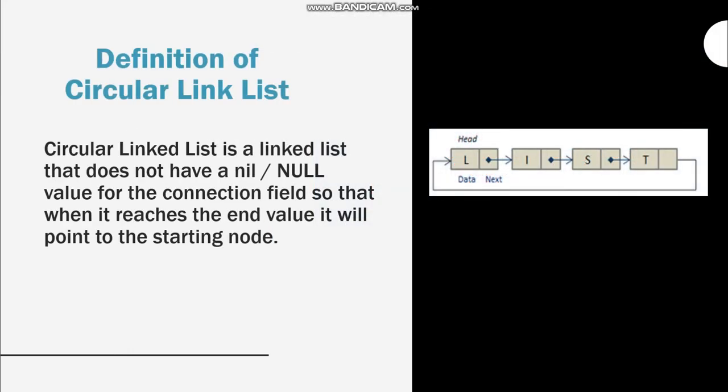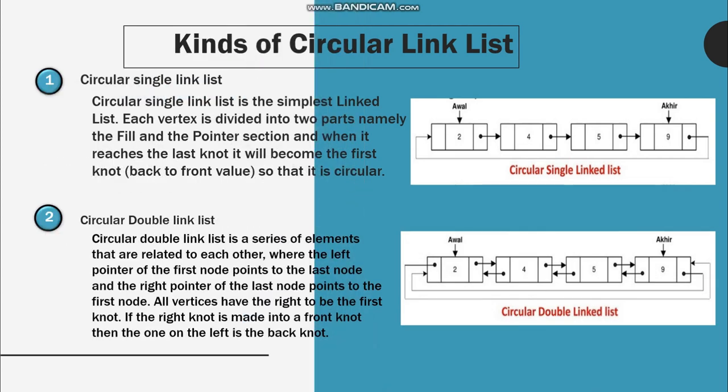Next is the definition of circular linked list. A circular linked list is a linked list that doesn't have a null value for the connection field, so that when it reaches the end it will point back to the starting node. There are two kinds of circular linked lists: first, circular single linked list, and second, circular double linked list.